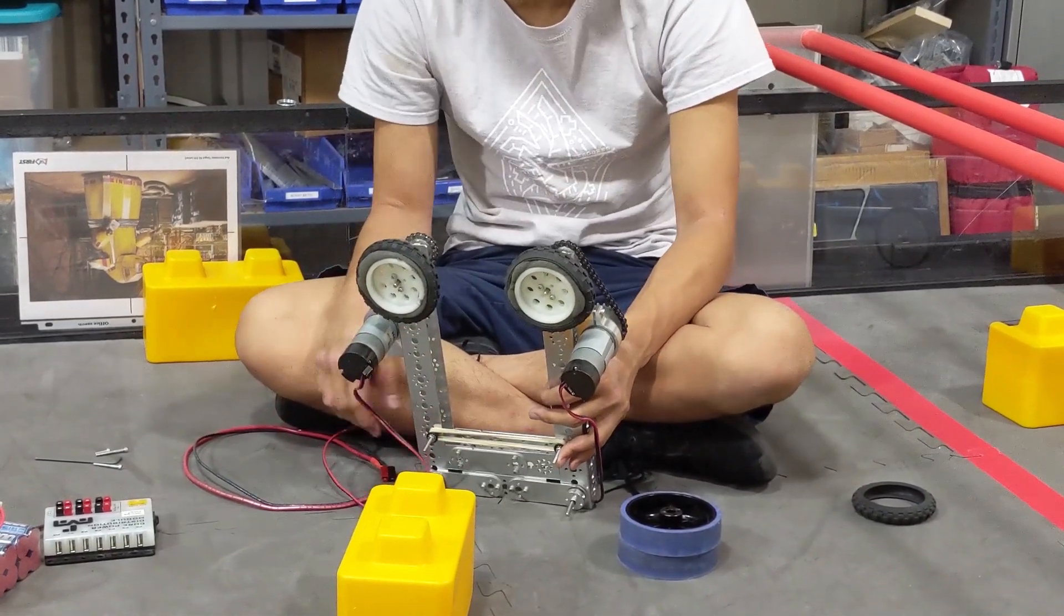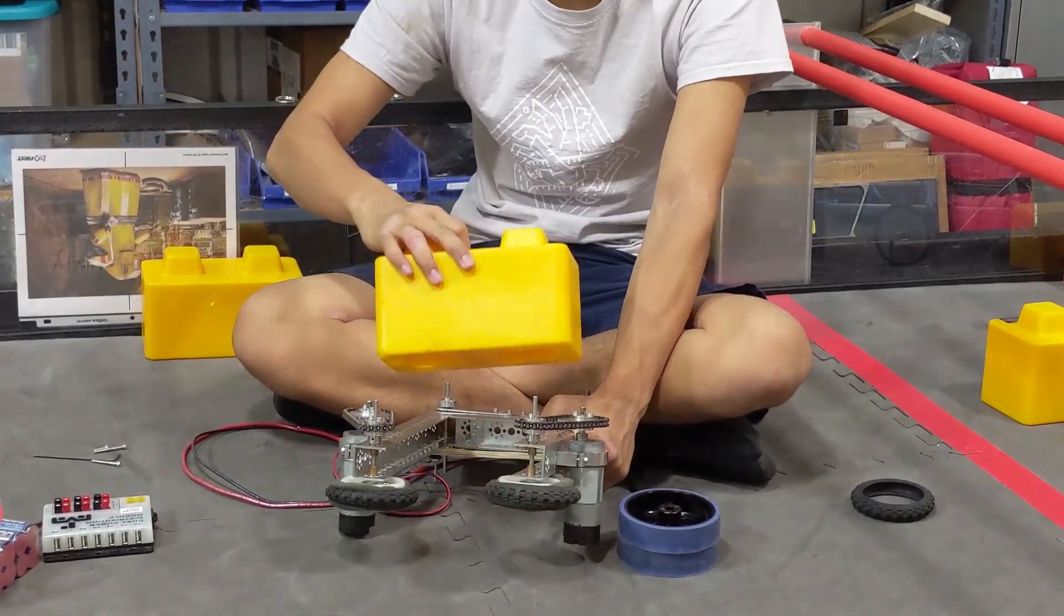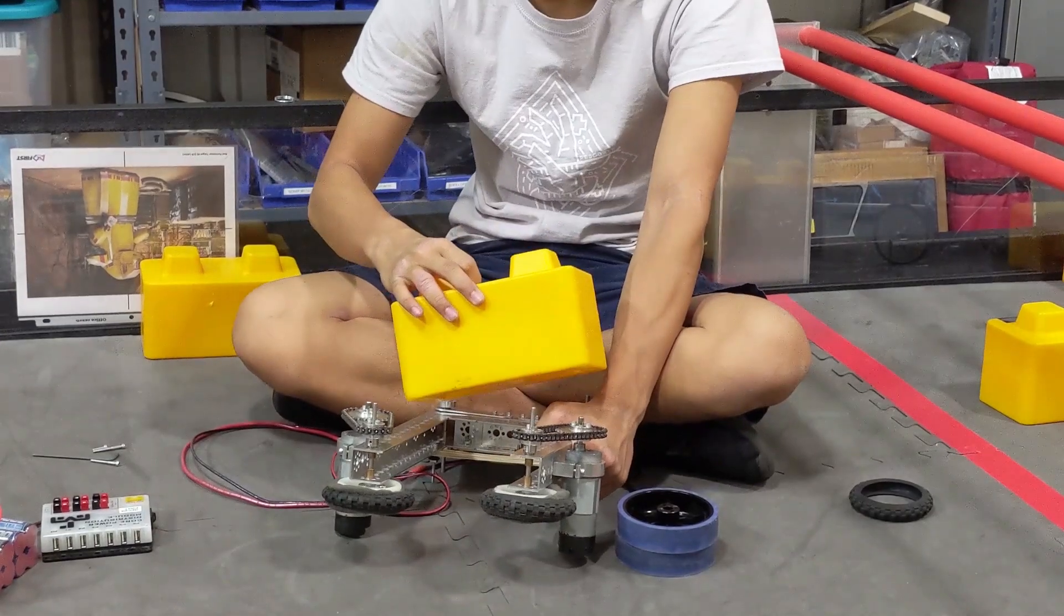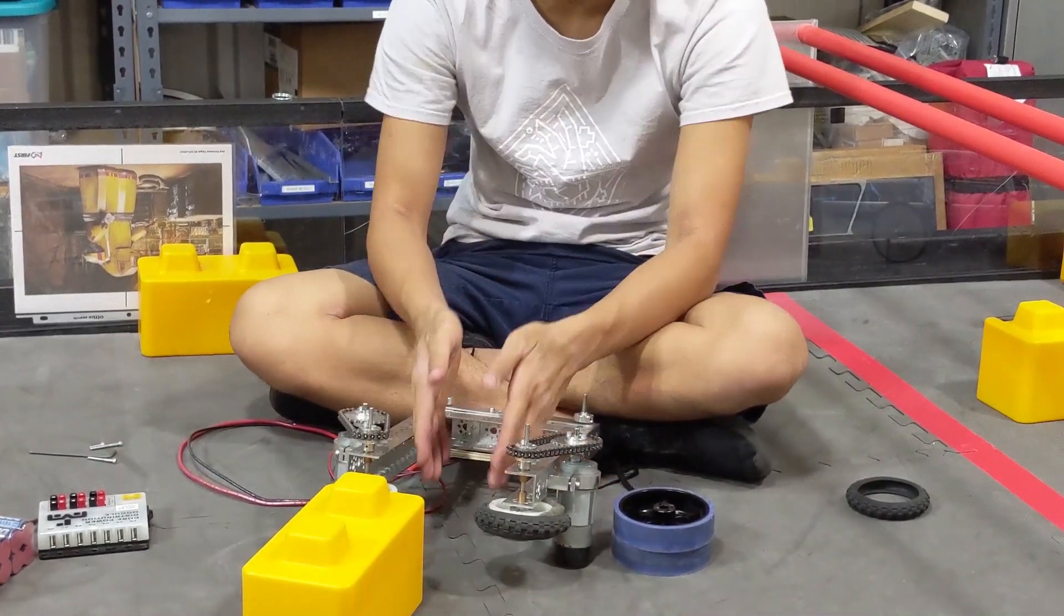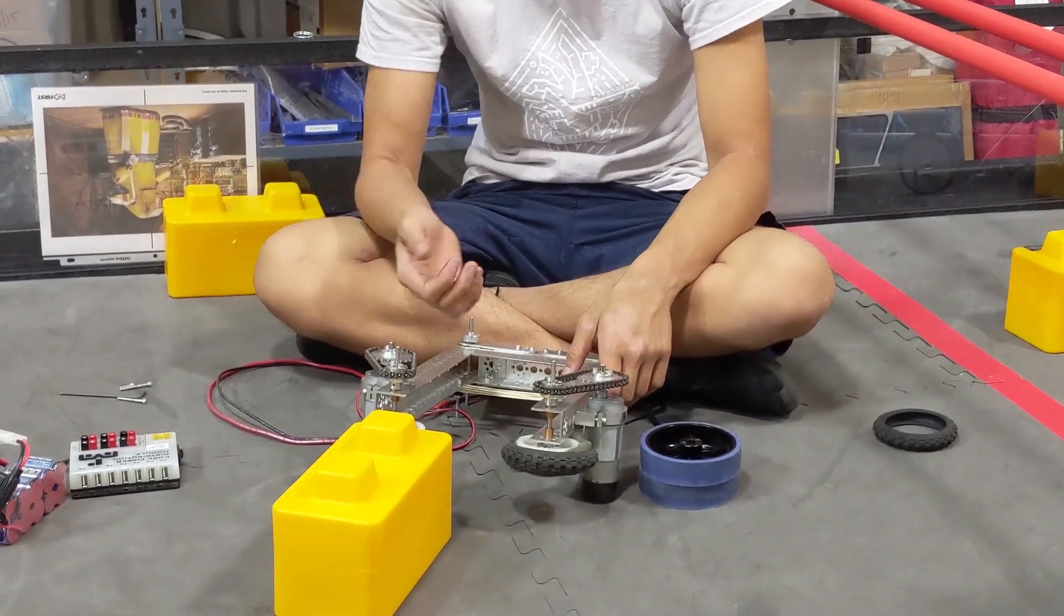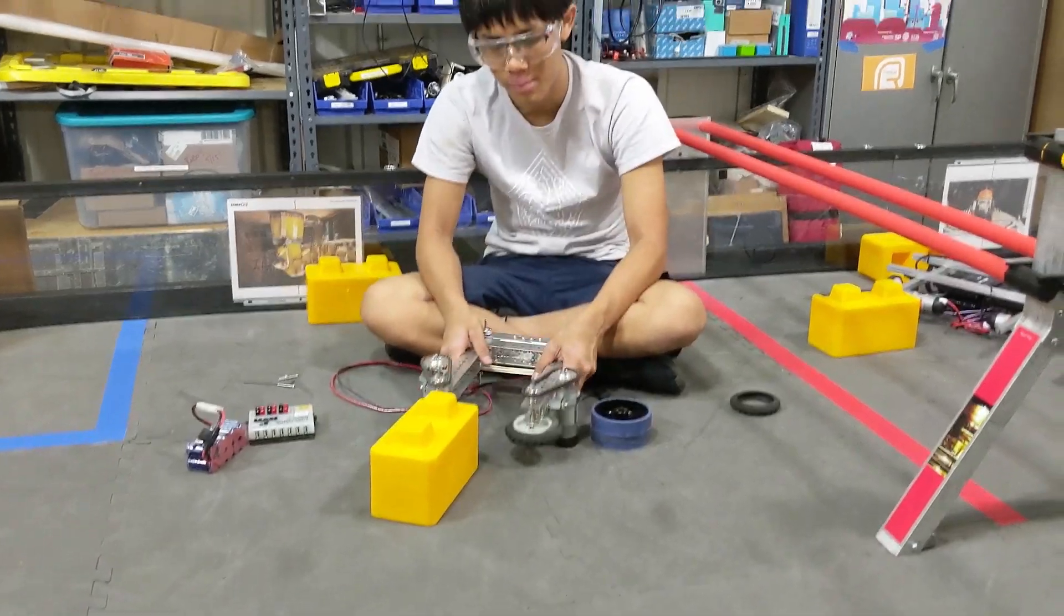One of the flaws that we saw a lot was that when we intake the block to a certain point, it would sometimes rotate 90 degrees and come in flat. One of the ways that we're planning to fix this is to add sidewalls on either side so that once you intake it, it's stuck in that vertical position instead of being able to rotate when it comes in.